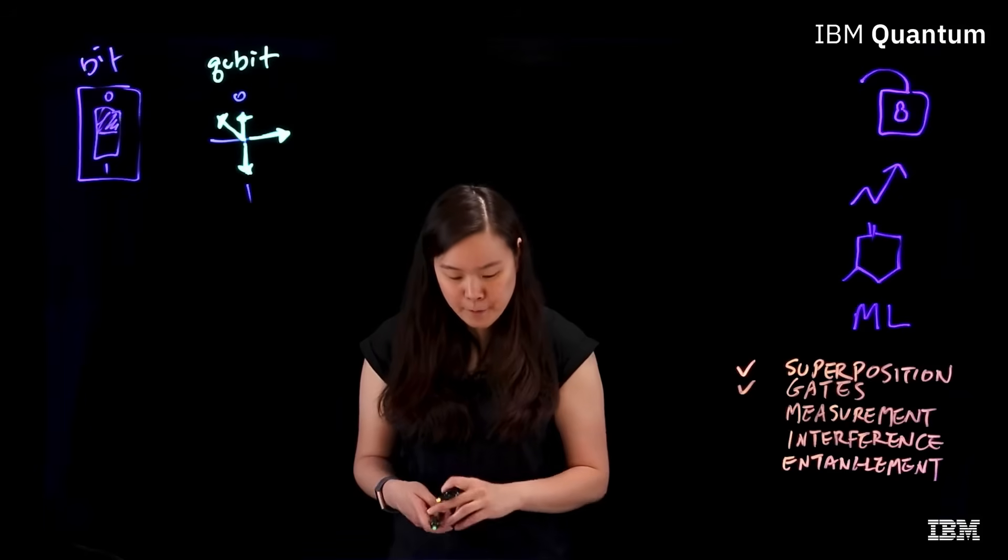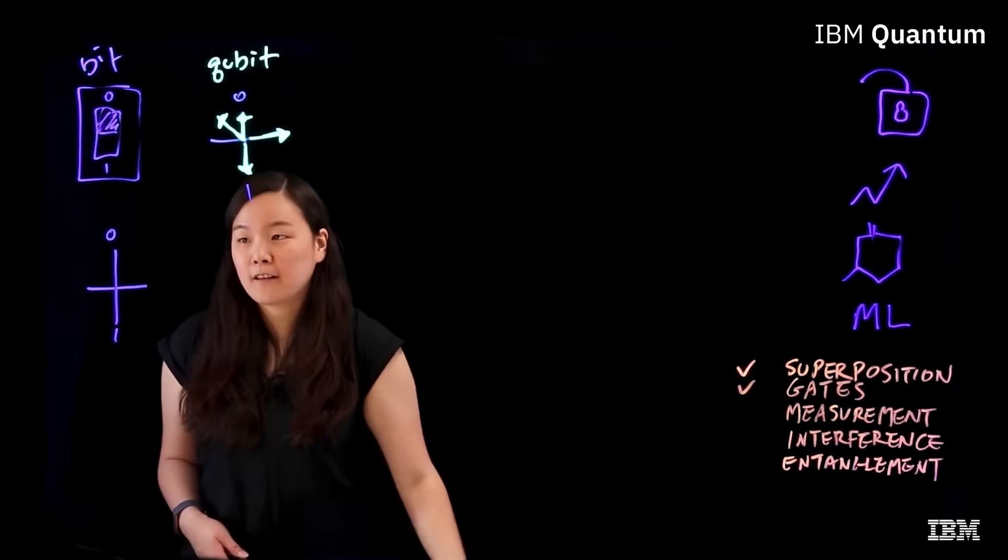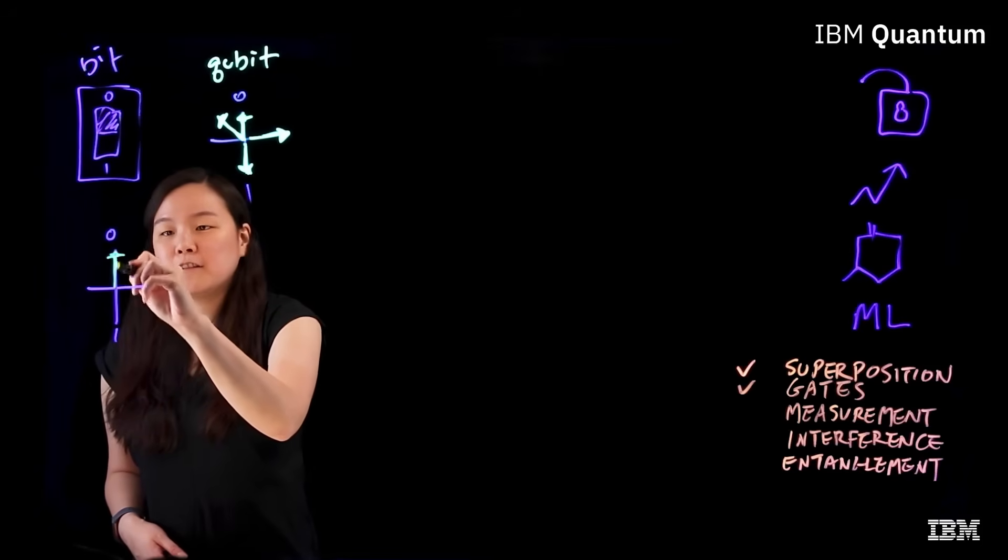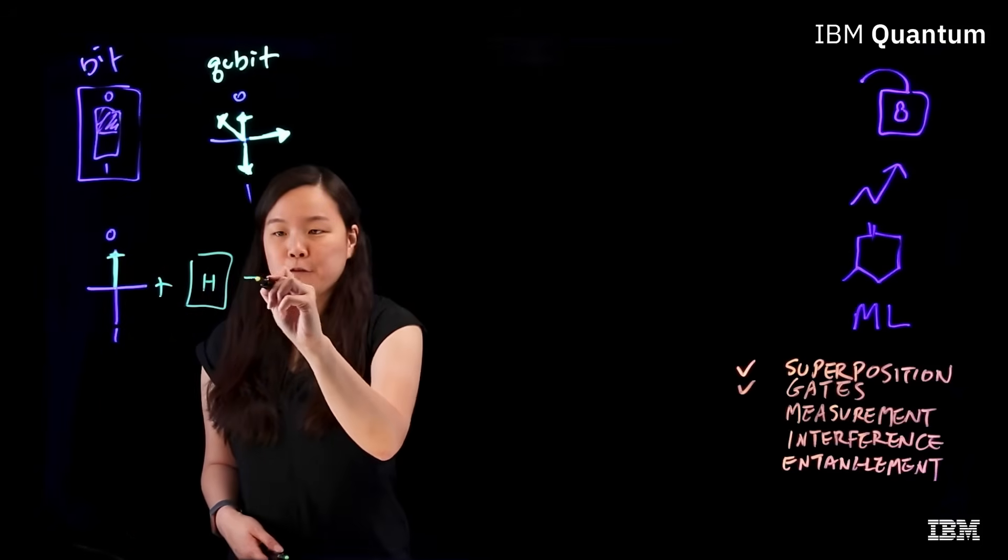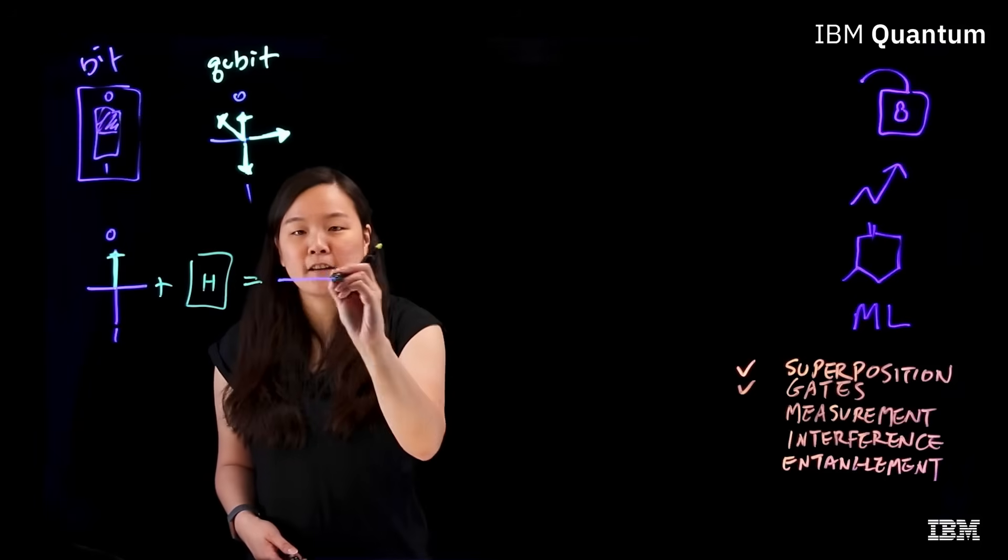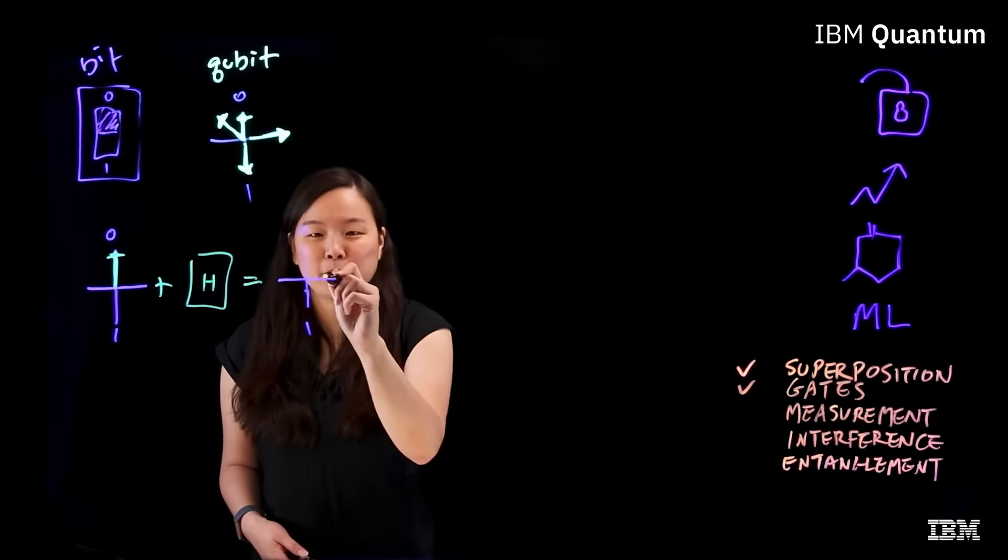For example, we can have a qubit that's at the state of zero. Then we can use the Hadamard gate, or H gate for short, to put it in a superposition between zero and one.